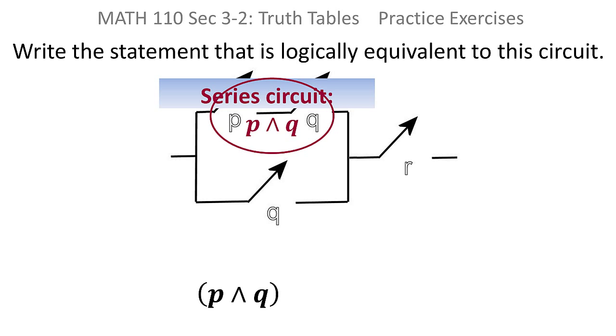For instance, that P, the gate P and Q at the top, those two gates are beside each other on one line, on one level, and we know that that is a series circuit or an AND, so that would be P and Q.